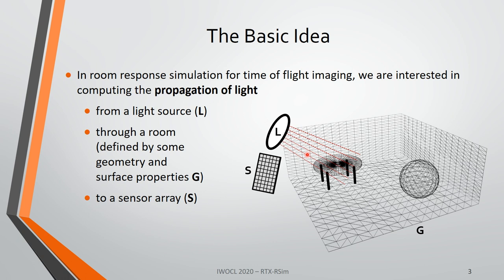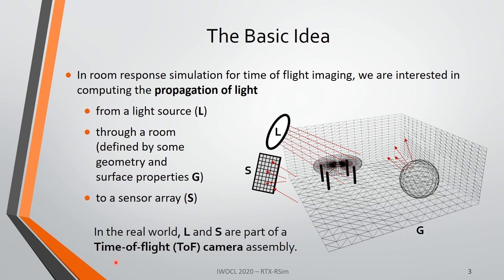You can imagine it like this: the light source generates some pulse of light, most likely not visible light. This light bounces around the room and finally ends up partially at the sensor. In practical terms, the light source and sensor are part of a time-of-flight camera assembly. They produce the light and look for the response at that particular wavelength, then try to make conclusions based on the shape of the light response.